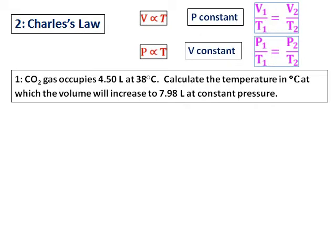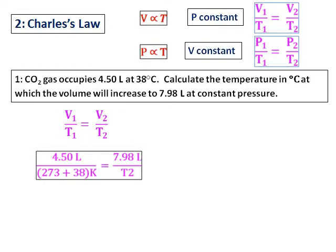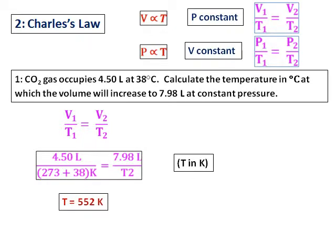First question on Charles law: carbon dioxide gas occupies 4.50 liters at 38 degrees Celsius. Calculate the temperature in degrees Celsius when the volume increases to 7.98 liters at constant pressure. The formula to use is V1/T1 = V2/T2. The key point is that temperature must be in Kelvin — add 273 to the Celsius temperature, calculate the new temperature in Kelvin, then subtract 273 to convert back to Celsius.